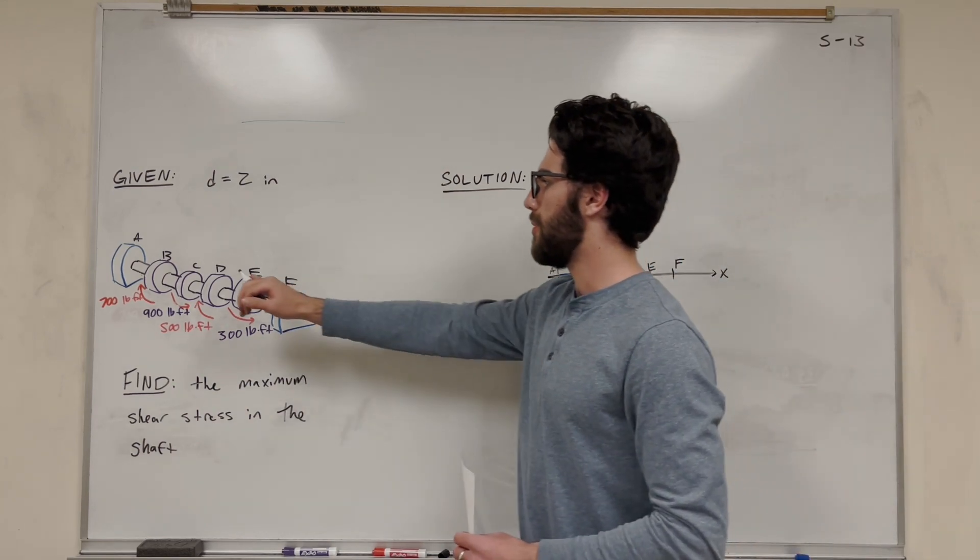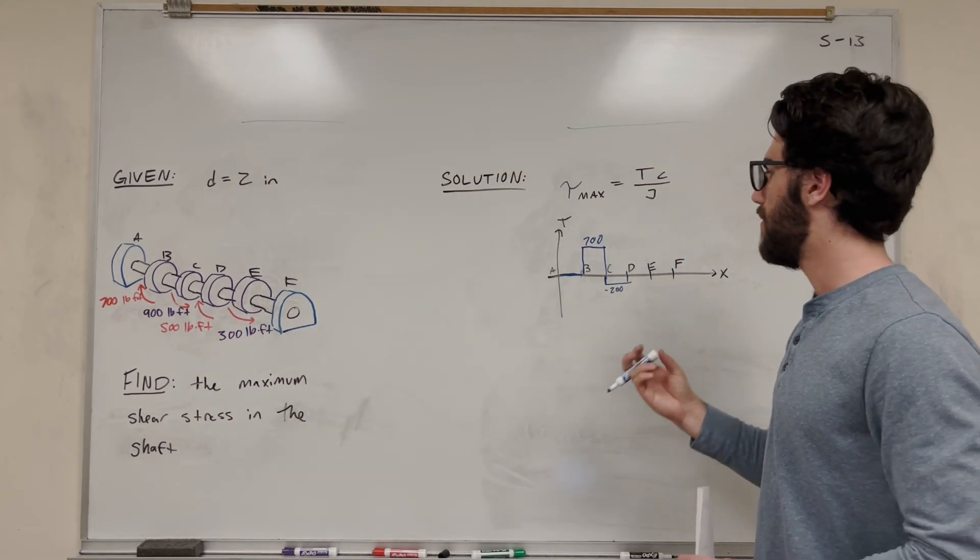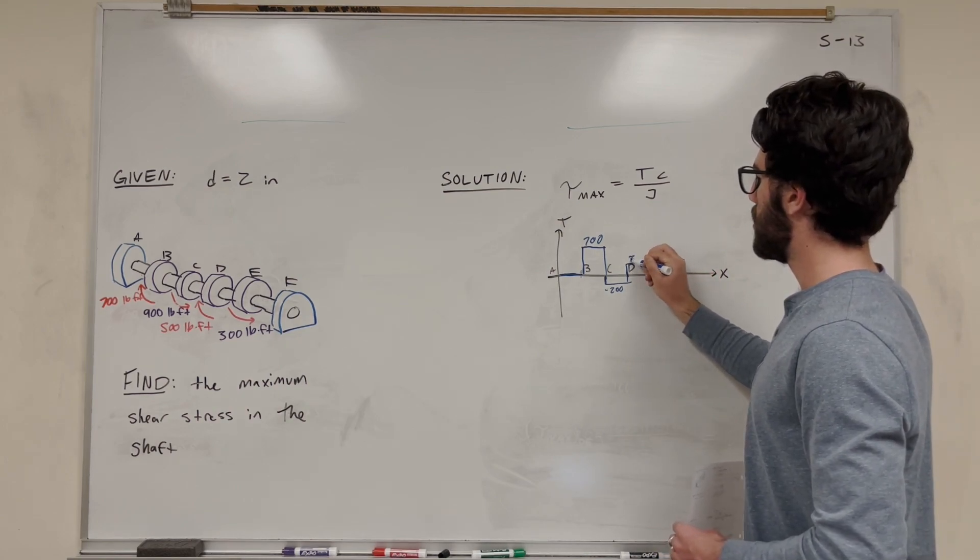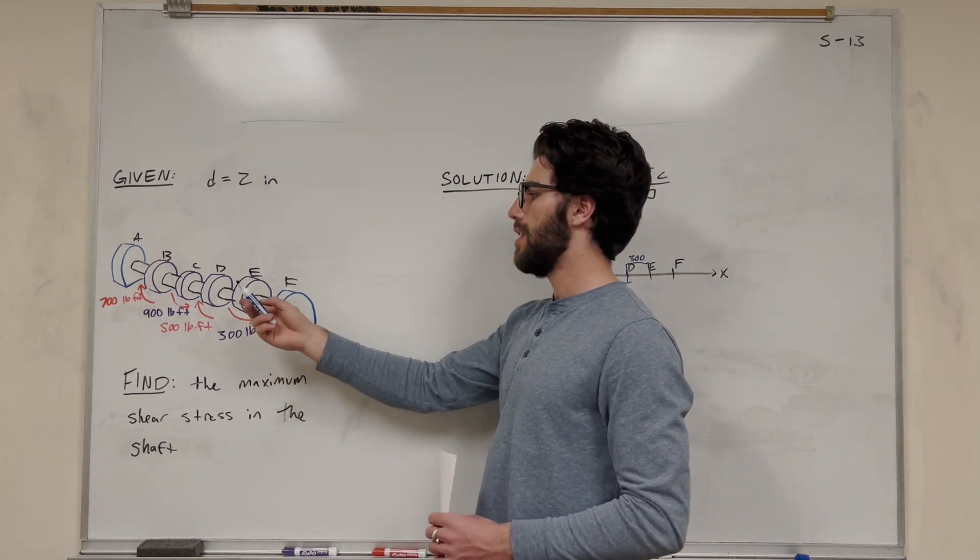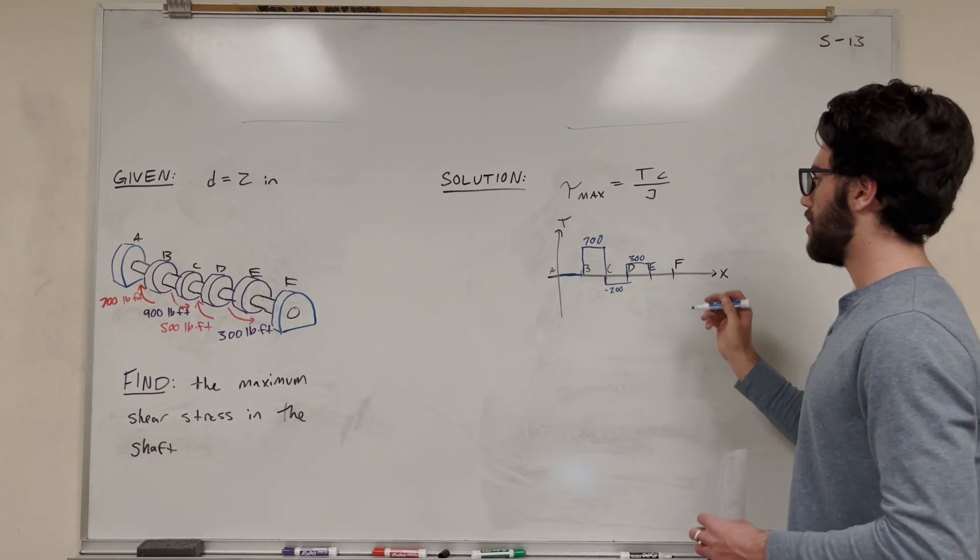Then if we took a cut between D and E, we're going to get this 500 pound-foot force in there, and that's going clockwise, so we're going to add that 500. That gets us up to 300 total. Then we're going to reach this 300 pound-foot torque, and it's pushing us counterclockwise, so it's going to subtract 300, get us down to zero.